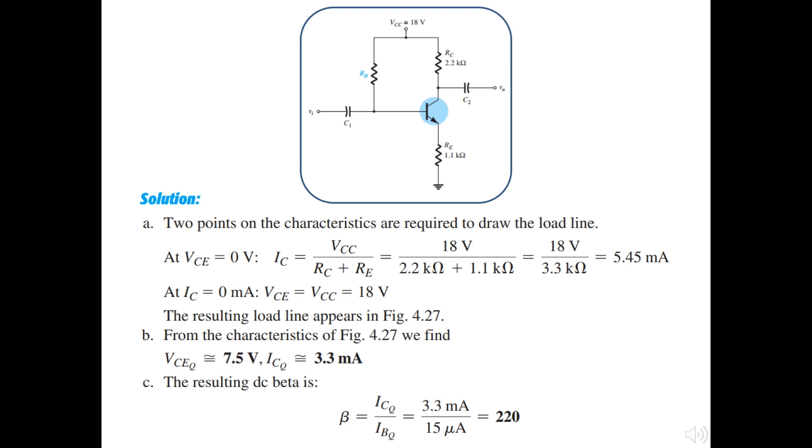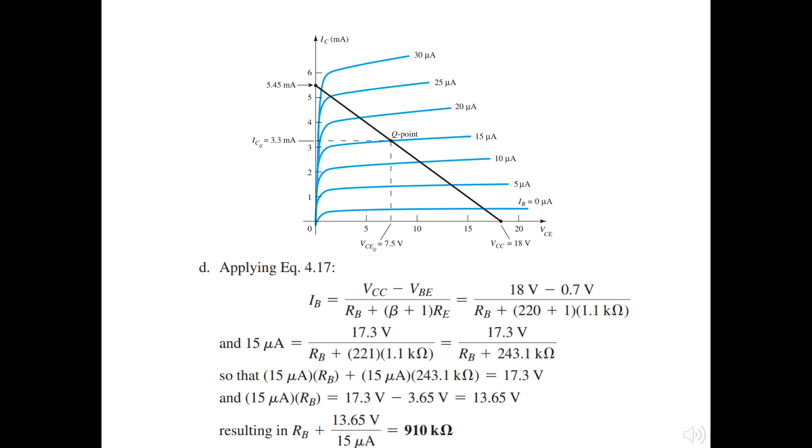The next one is plot the Q point. To do this, by the given current which is 15 milliampere, we can have the X and Y point from the load line and the intercepted IB current line. There are VCEQ 7.5 volts and ICQ is 3.3 milliampere. To determine the beta at Q point, just apply these points in the ratio of ICQ by IBQ which later will be 220. Required RB can be calculated with the IB equation here. By manipulating this equation, we finally achieved the value of RB as 910 kilo ohms.